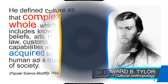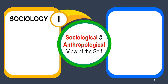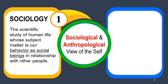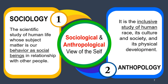Let us take a look at the sociological and anthropological view of the self. Sociology is defined as the scientific study of human life, whose subject matter is our behavior as social beings in relationship with other people. Anthropology, on the other hand, is the inclusive study of the human race — its culture, society, and physical development.